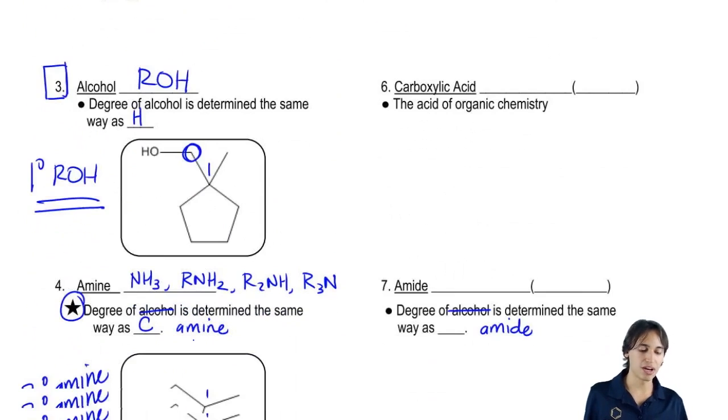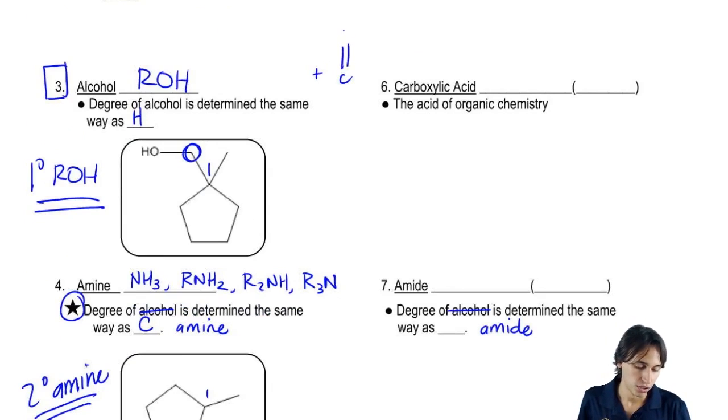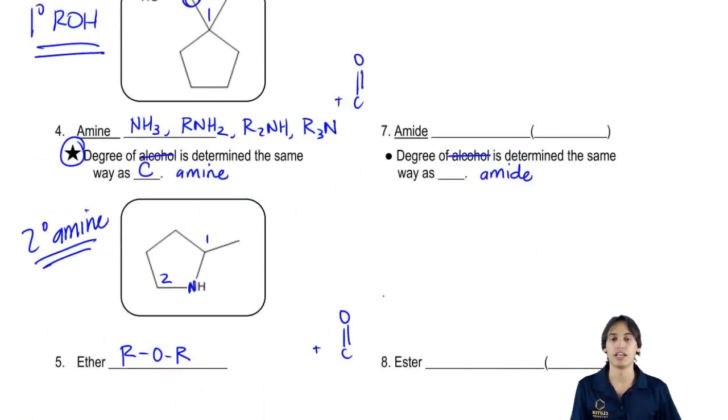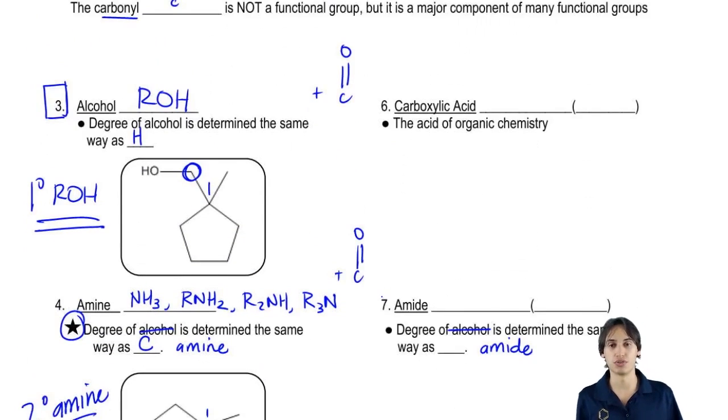Now what I want to do is add carbonyls next to all of these and see how that changes them. So I'm going to add a carbonyl to my alcohol, I'm going to add a carbonyl to my amine, and I'm going to add a carbonyl to my ether and show you guys how that changes the functional group.